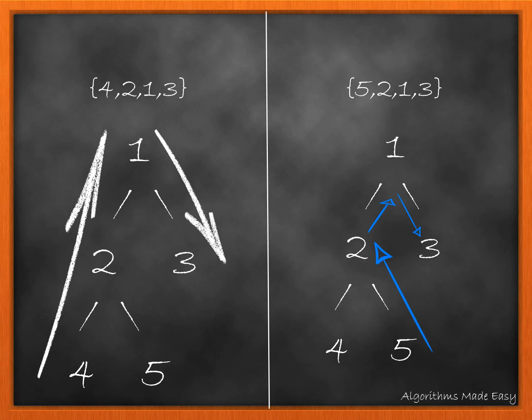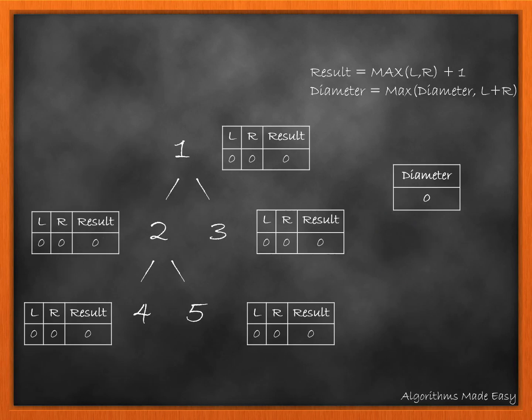In other words, diameter of a binary tree is the number of edges present in the longest path. Now, let's see how we can reach this solution. Let me first explain all the variables that we are going to use.